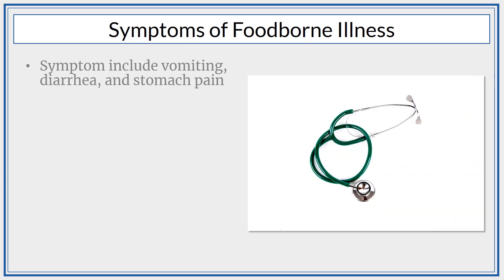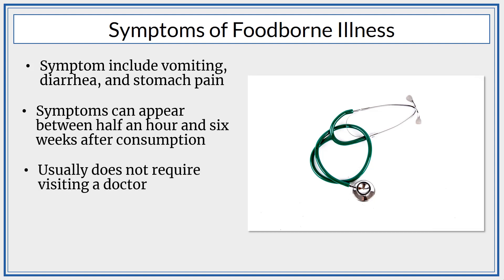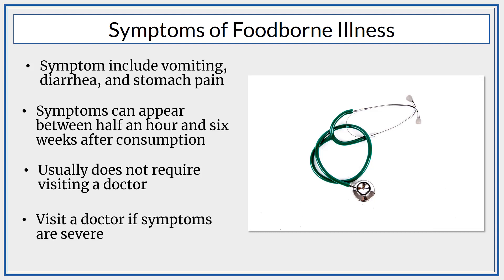Symptoms of foodborne illness include vomiting, diarrhea, and stomach pain. After eating contaminated food, symptoms can appear as soon as half an hour and as late as six weeks after consumption. These symptoms usually don't last for very long and don't require visiting a doctor. However, those with severe food poisoning may be hospitalized. If symptoms are severe, such as a fever of higher than 101 degrees Fahrenheit or loss of consciousness, you should consult a doctor.